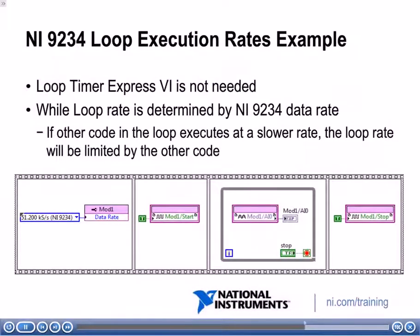Let's look at an example of how we would programmatically set the data rate and what the application would typically look like. Because the NI9234 can use a data rate property to control the loop execution rate, we won't need to use the loop timer express VI. In the first frame, we set the data rate to 51.2 kS per second. In the next frame, we start the module by setting the start property to true. Then in the while loop, we continuously read what's coming in at analog input zero channel. Once someone hits the stop button, the last frame stops the module by setting the stop property to true.